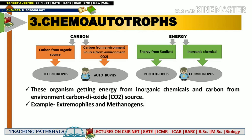The third category is chemo-autotrophs, combining the concepts of chemotrophs and autotrophs. Chemo-autotrophs are those microorganisms which get their energy from inorganic chemical sources and their carbon from environmental carbon dioxide. The best examples of chemo-autotrophs are extremophiles and methanogens.